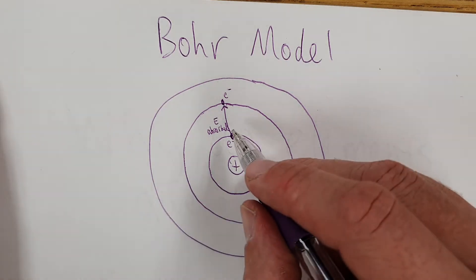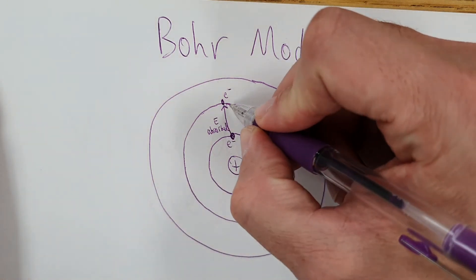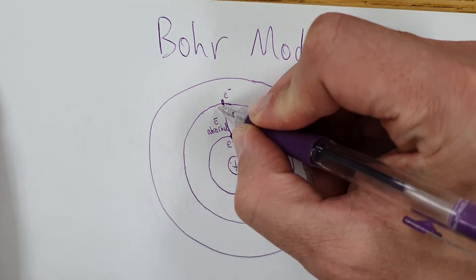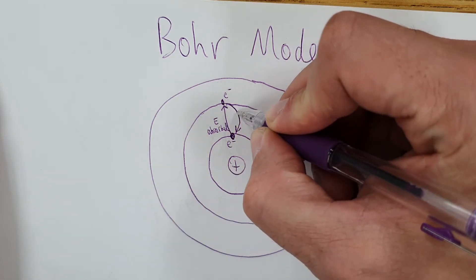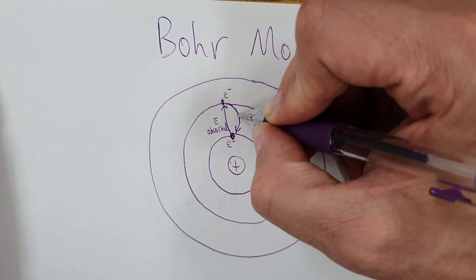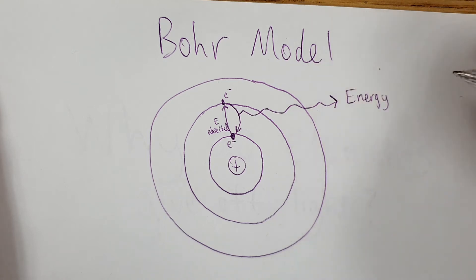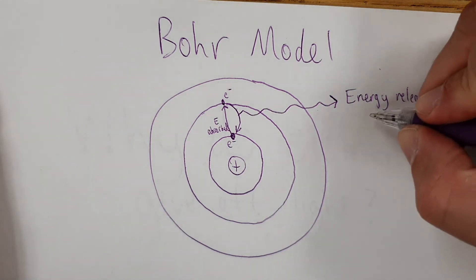The idea was okay, that energy must be getting released as the electron comes back down to where it started. So the electron comes up here after absorbs energy and then it goes back down after it releases that energy, energy that gets released in the form of light.